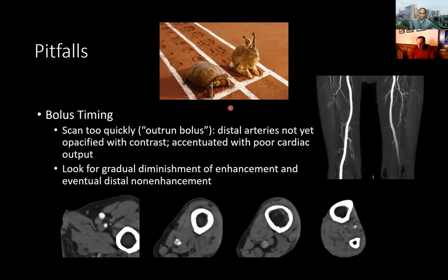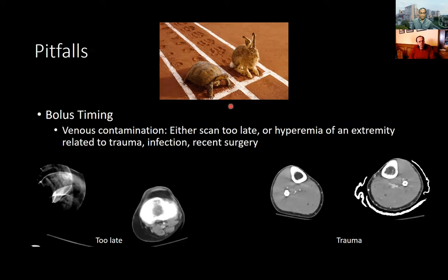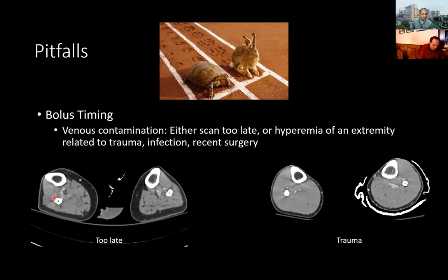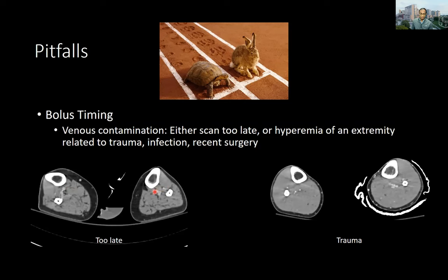Occasionally, because of really poor cardiac output, the delay still isn't well opacified, but we've at least tried to address it. The opposite case — a scan that's too late — can occur if a patient was moving and the scan had to be repeated. It doesn't make interpretation impossible, but you have to work harder to identify the artery among those paired veins. We will also frequently encounter early venous opacification in the setting of hyperemia, where an extremity receives relatively more blood flow due to trauma, infection, or recent surgery.